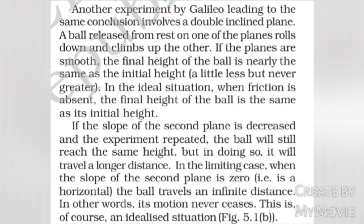Another experiment by Galileo leading to the same conclusion involves a double inclined plane. A ball released from rest on one of the planes rolls down and climbs up the other. If the planes are smooth, the final height of the ball is nearly the same as the initial height — a little less but never greater. In this ideal situation, when friction is absent, the final height of the ball is the same as its initial height.